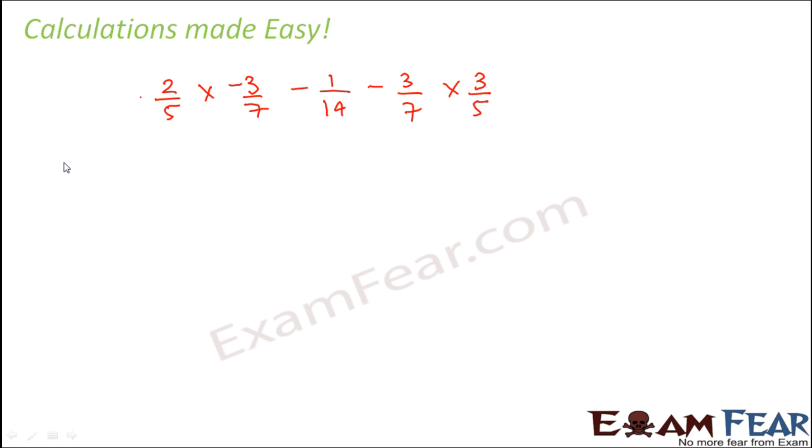So now what we do? Now as we know the commutative property, the distributive property and the associative property, we will make use of those properties. Now here what do we see? We see that this is one term which has to be multiplied. This is another term which needs to be multiplied.